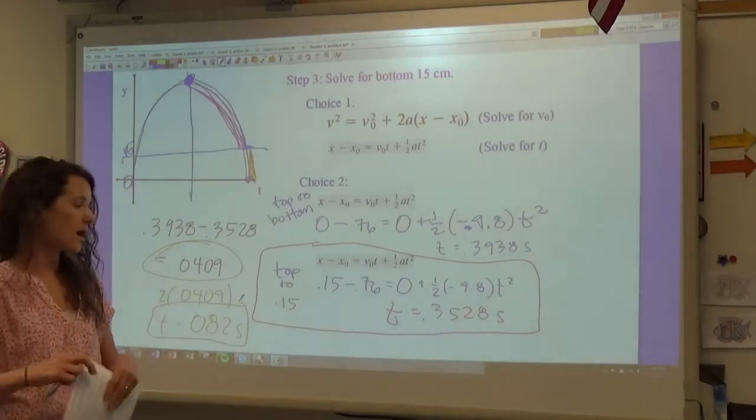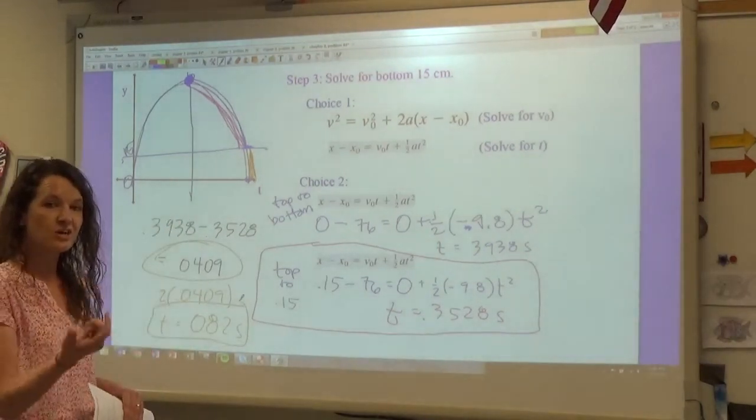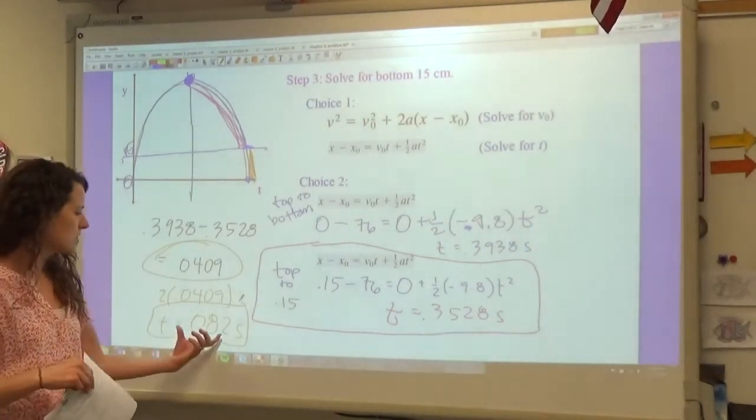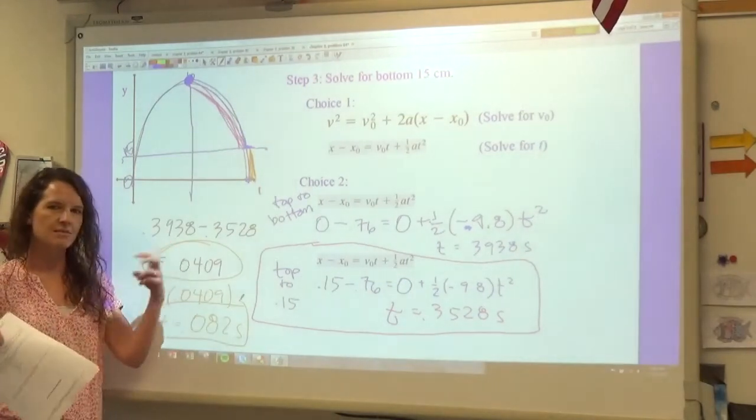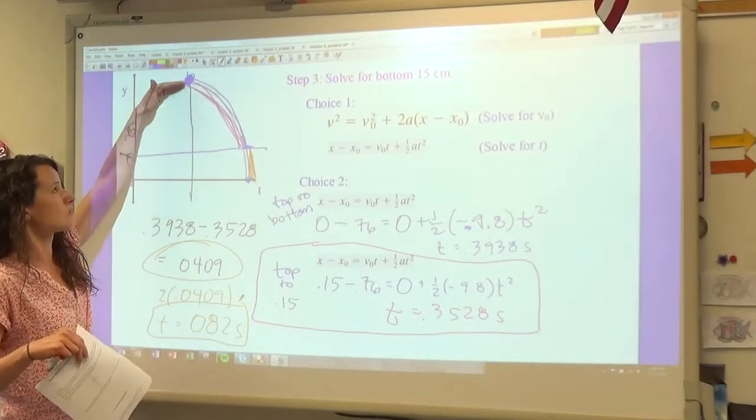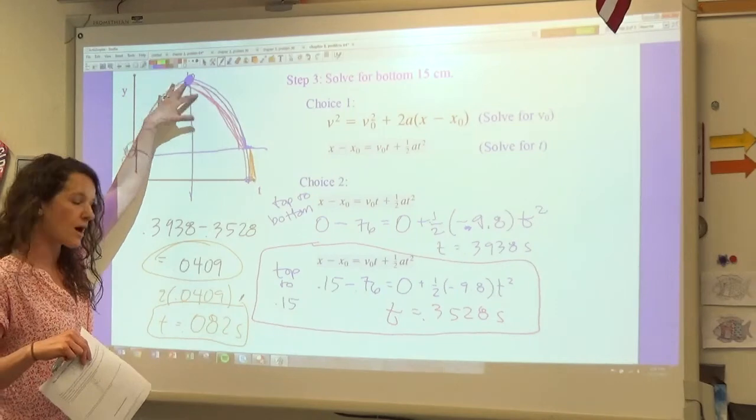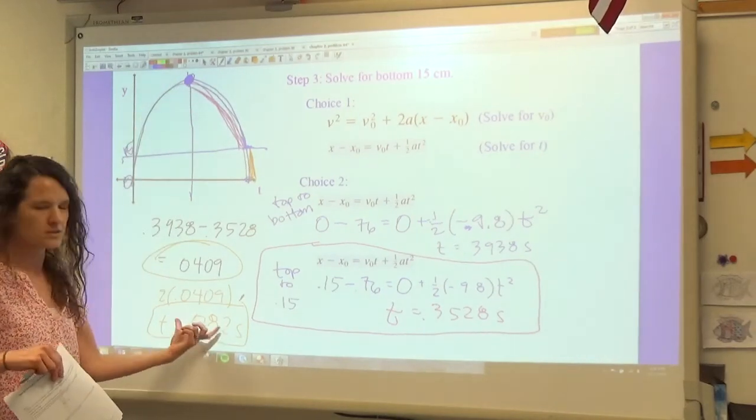And so we can see right here that if you compare that to the top 15 centimeters, that took 0.350 seconds. So that's why you have the hang time at the top, because you have a much longer amount of time when the player is at the top as compared to the bottom, which is a much shorter amount of time.